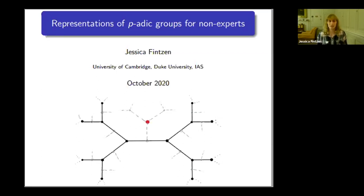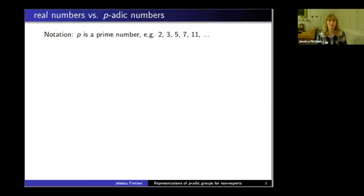I want to begin by telling you what p-adic groups are. First, p is a prime number—2, 3, 5, 7, 11, whichever is your favorite prime number. I should first tell you what the p-adic numbers are in order to tell you what p-adic groups are.